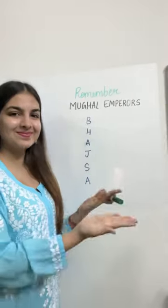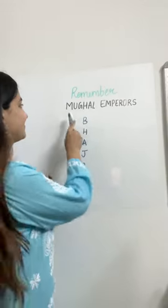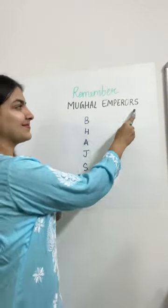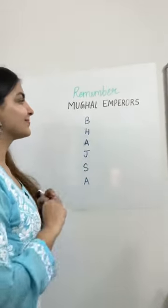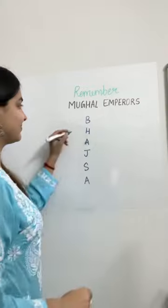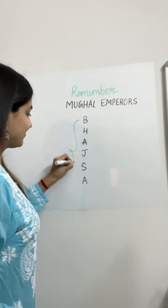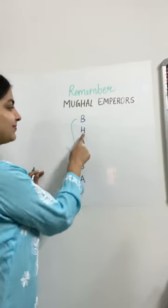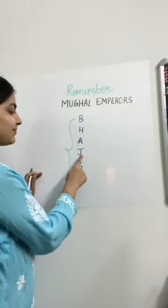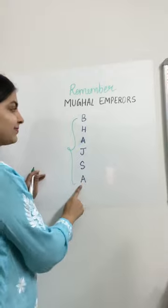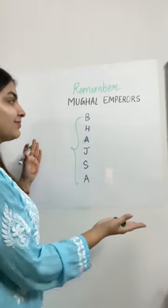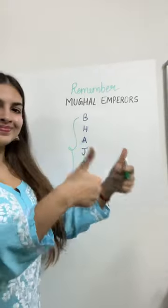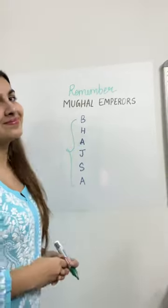Hi everyone, let's learn how to remember the names of the Mughal Emperors in chronological order. First of all, you have to remember this trick: BHAJSA. It's that simple.